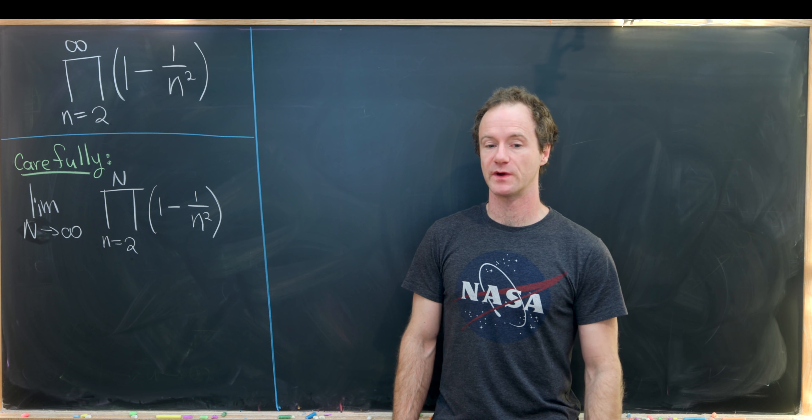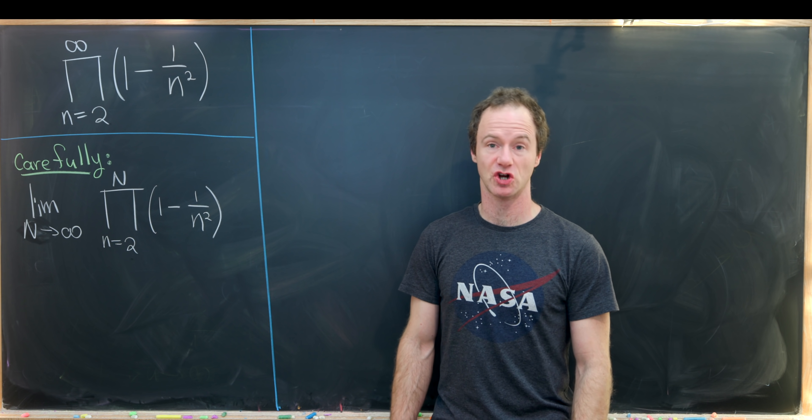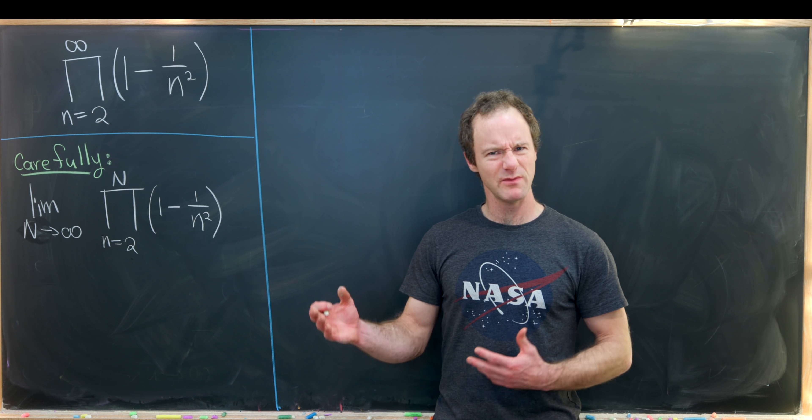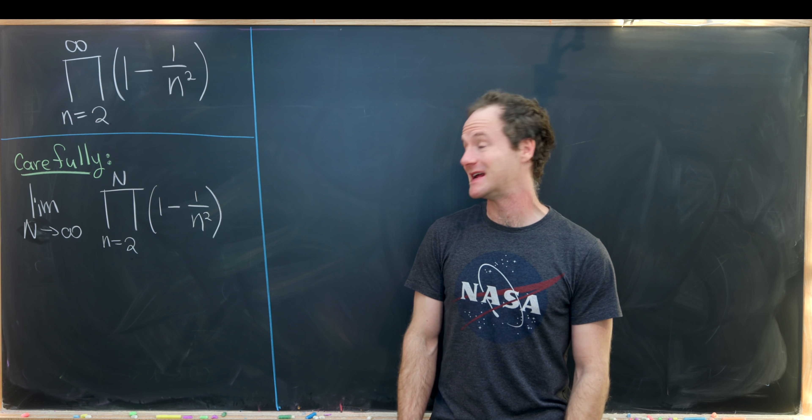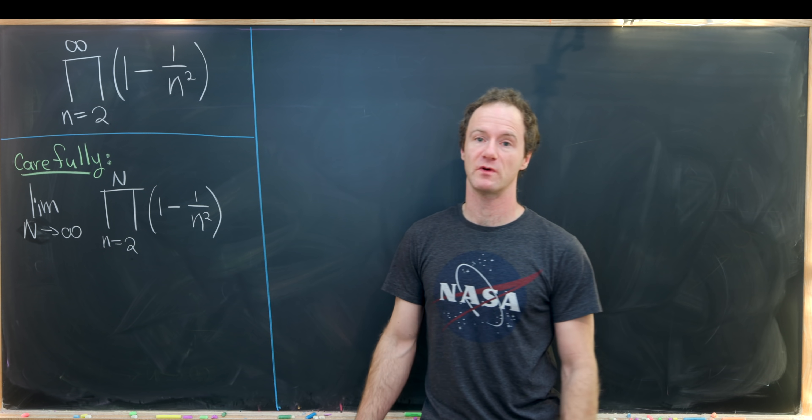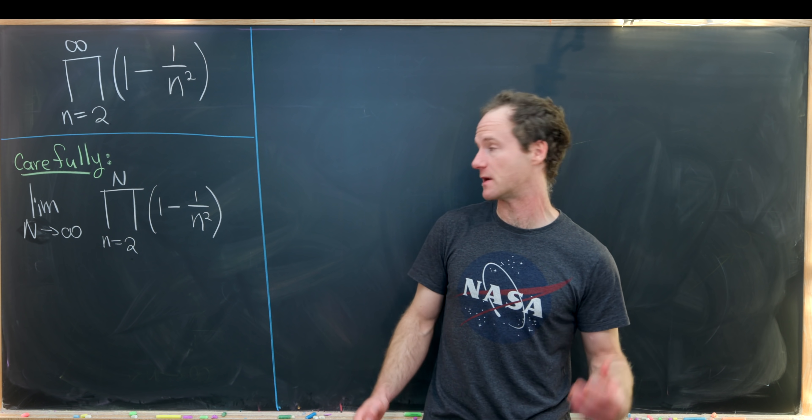And to get a handle of what's going on here, I think we should maybe make a chart. And then from that chart, maybe we can get some sort of idea as to the closed form of this partial product, which we'll obviously have to prove somehow.